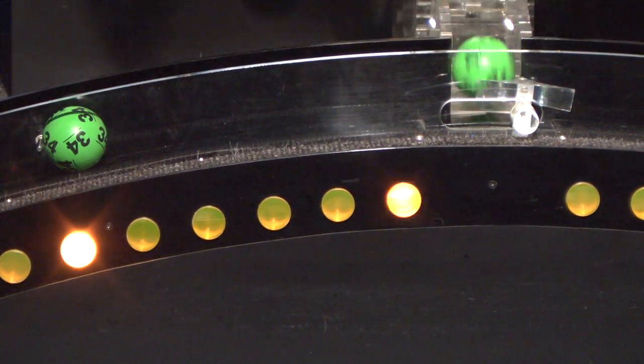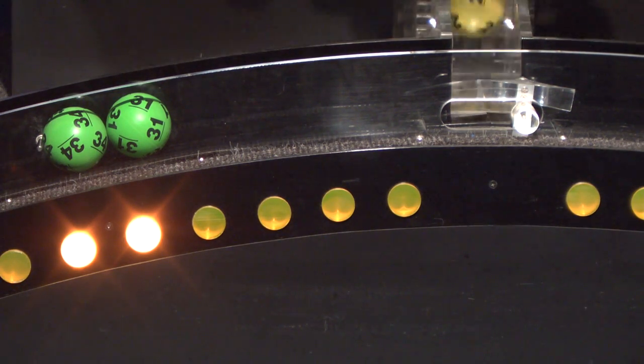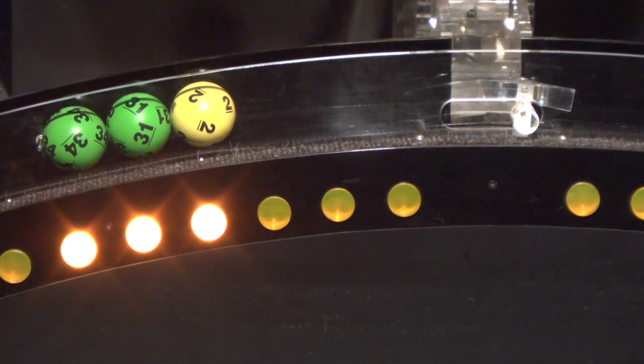Our first number is 34. Next is 31. That's followed by 2. If you've matched these three numbers, you've already won a prize.